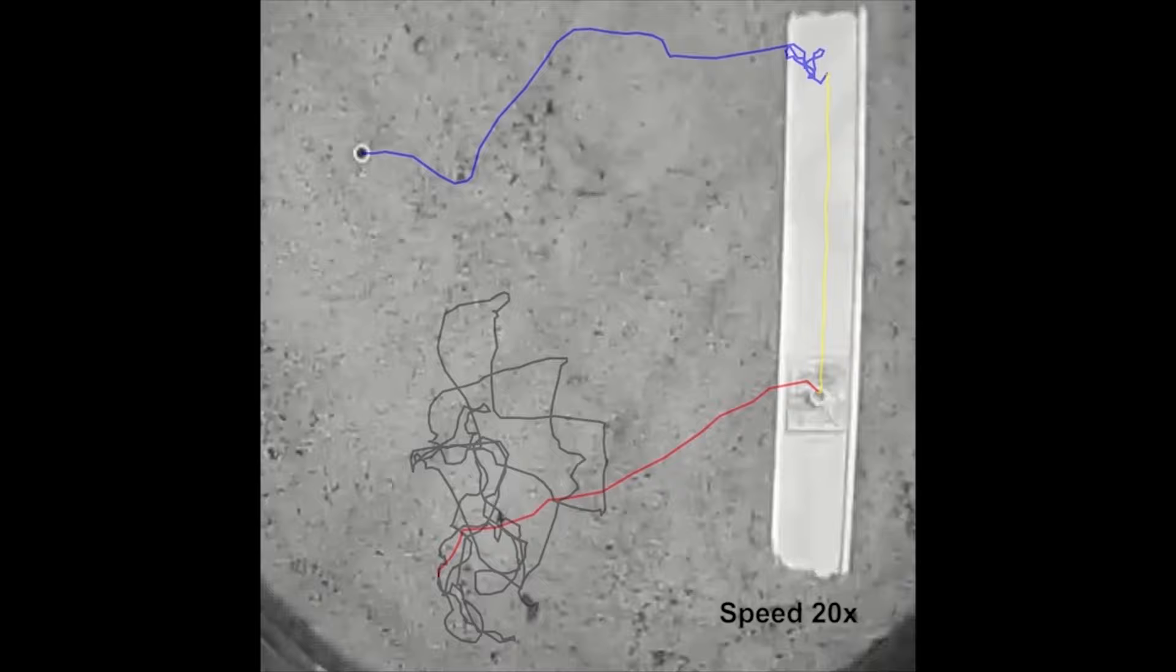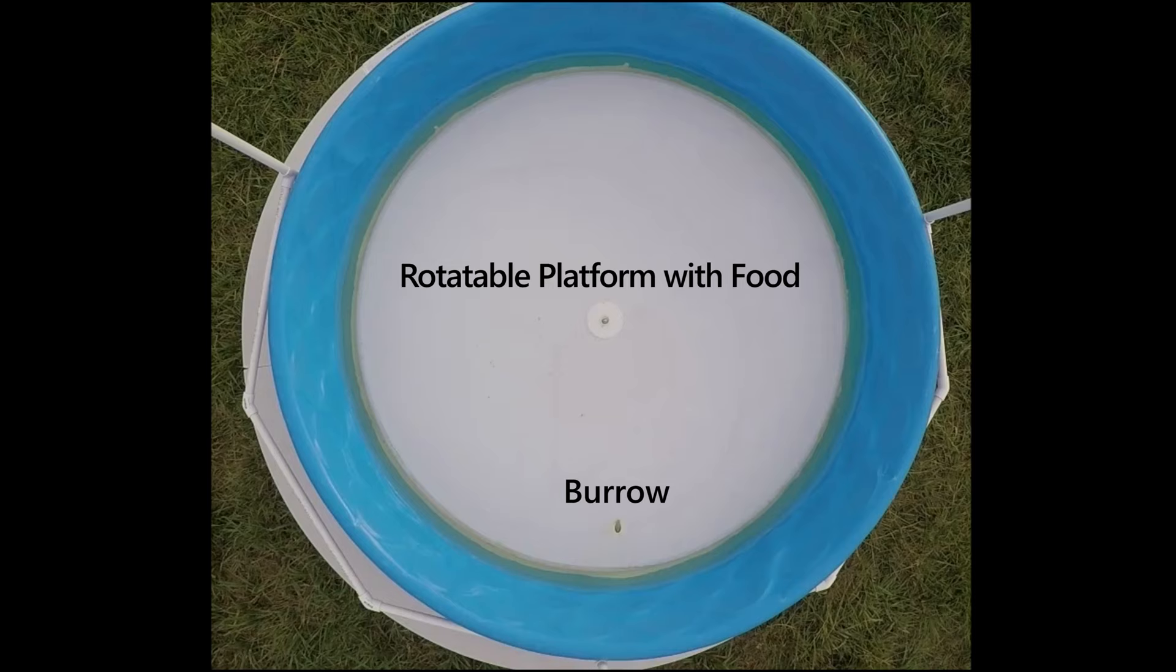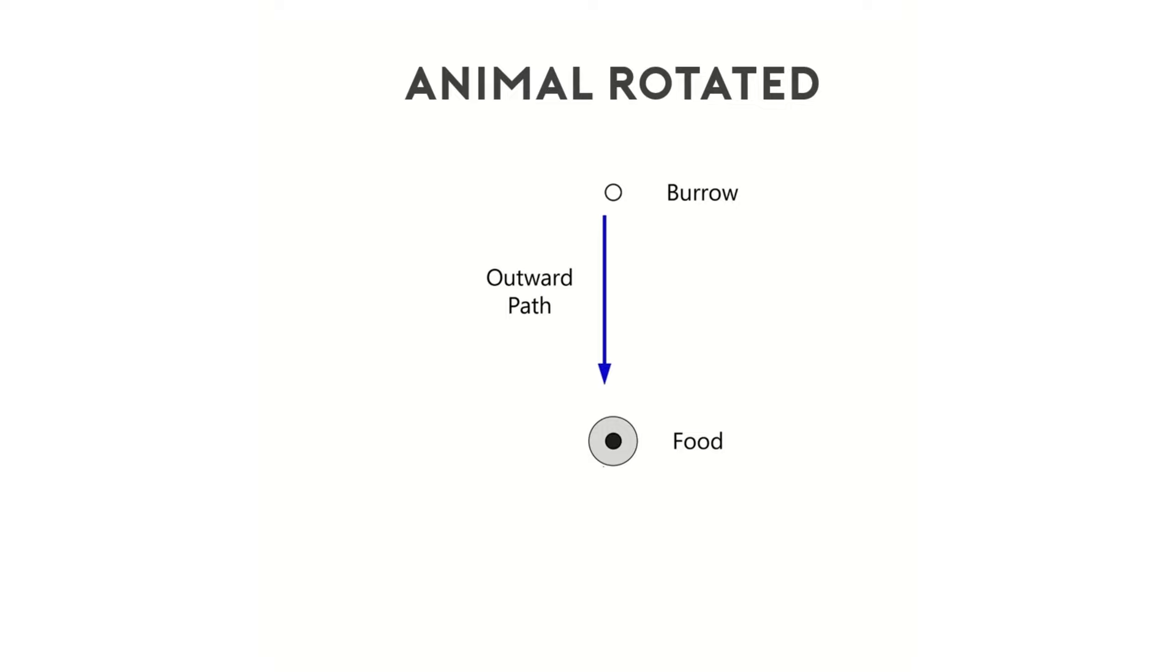Mantis shrimp could potentially use a number of varied cues for orientation underwater. In order to narrow down the possible cues they use, we built a rotatable platform that was centered in large arenas placed outdoors under open skies. Once animals found food placed on the platform, we slowly rotated them 180 degrees.